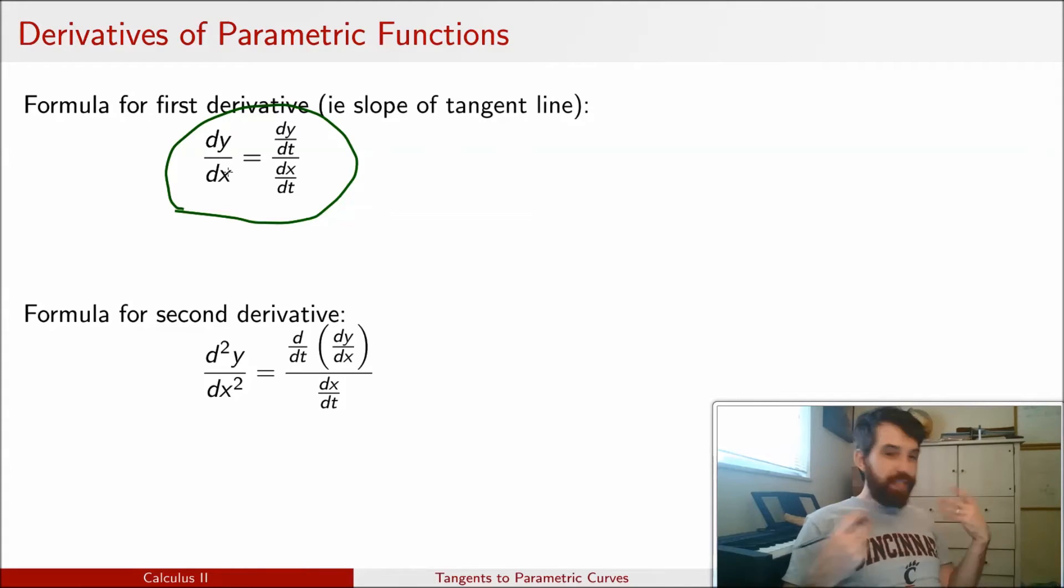There's also a formula I can do in the exact same way by applying the chain rule but just up one level. And that's going to give me a formula for the second derivative: derivative with respect to t of the first derivative quotient divided by the derivative of x with respect to t.